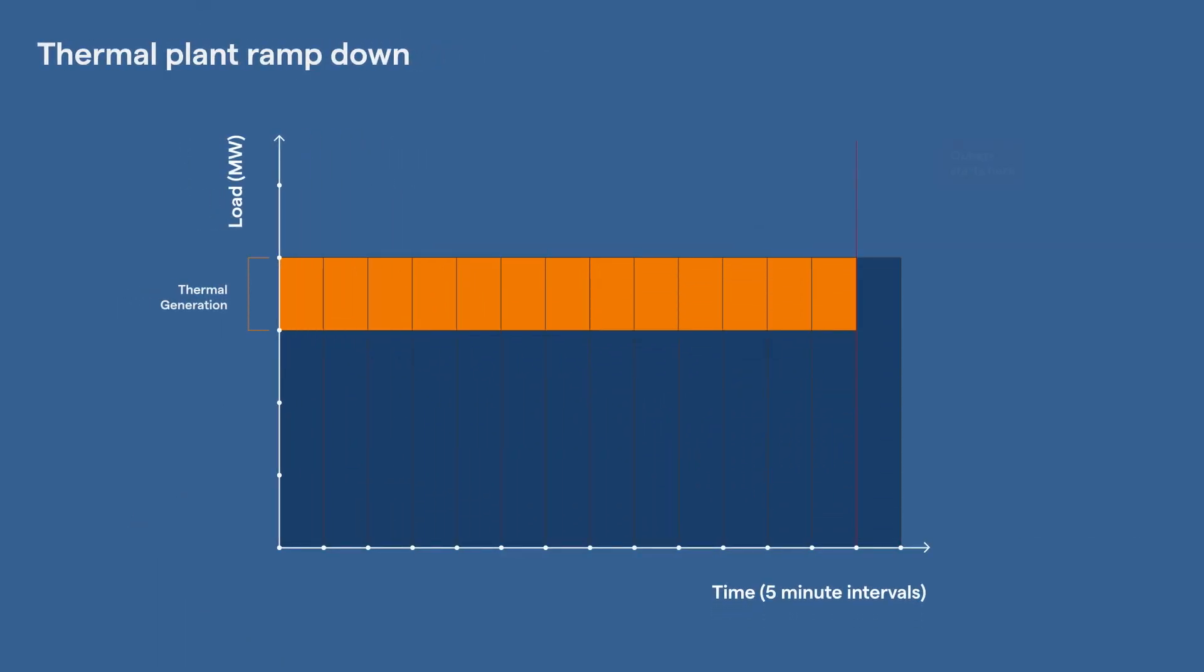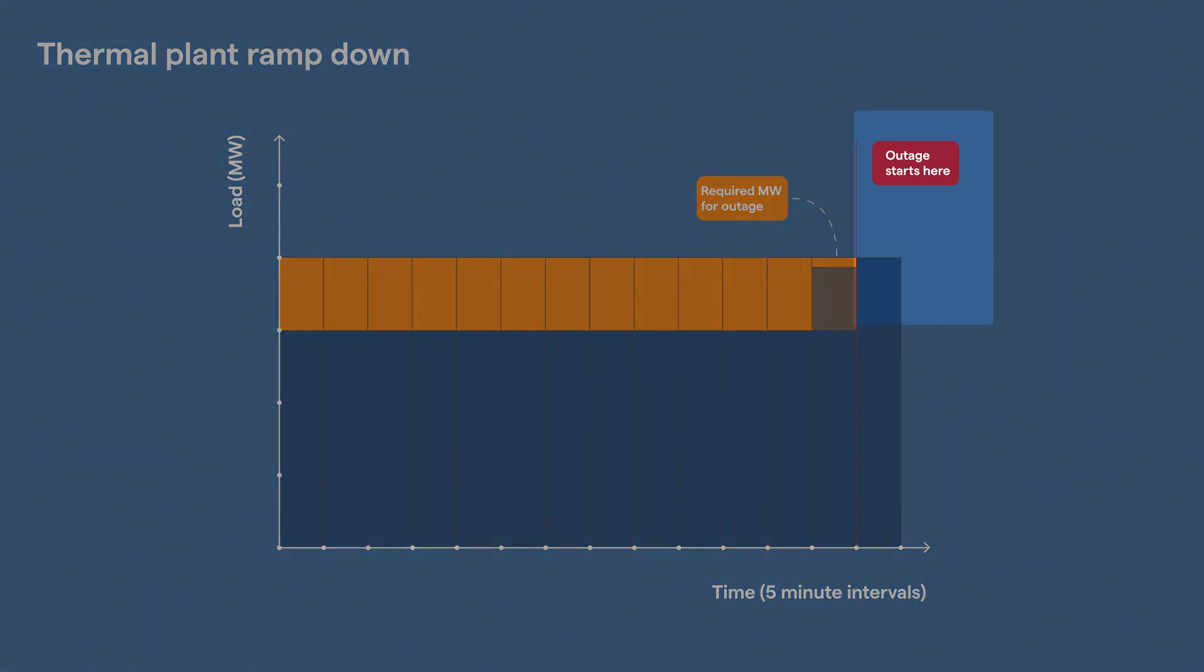When there is a planned outage in the area, it is unable to start until the generation reaches the lower megawatt levels required for the reduced transmission capacity. An SPD constraint will only apply from the start of the scheduled outage time, which is too late for slow ramping generation to get to the required level for the outage to start.